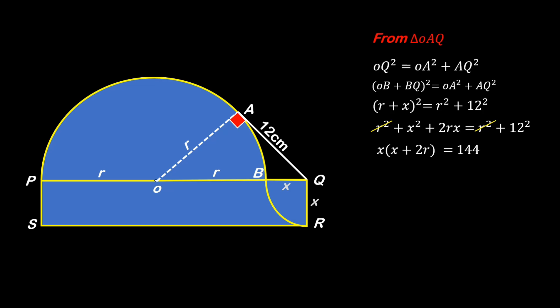We have x(x + 2r) = 144. Now this x is actually length QR, while x + 2r (x is BQ, and PO is r and OB is r) so x + 2r is actually the length PQ.